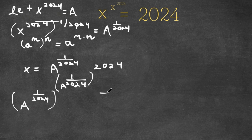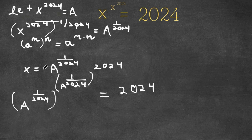And now this is equal to 2024. Remember, a to the power of m, to the power of n, is equal to a to the power of m times n.